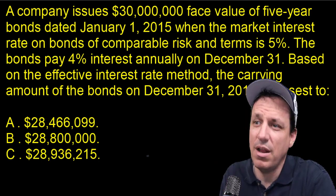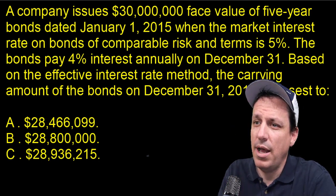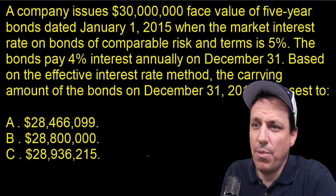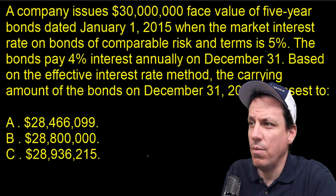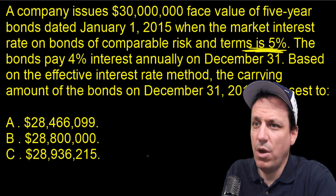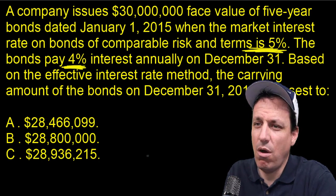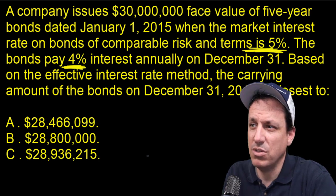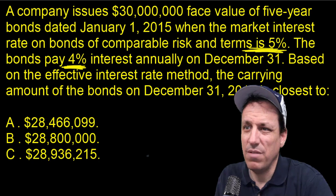Based on the effective interest rate method, the carrying amount of the bonds in the year it is issued at the end of the year is closest to a couple of answers — all of them are below $30 million. The bonds are required to pay 5% by the market, but the coupon payments only pay 4%, so it's a discount. We're actually going to have to do this the hard way and figure this out.